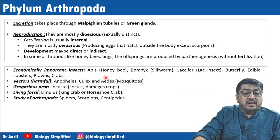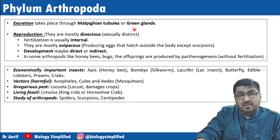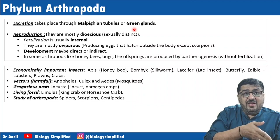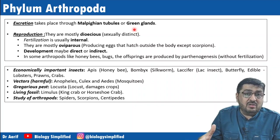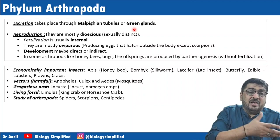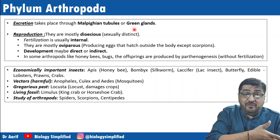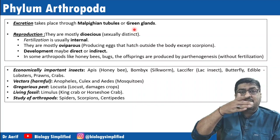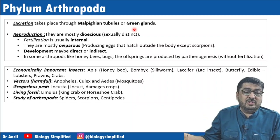Excretion takes place through Malpighian tubules, also called green glands. We have progressed from protonephridia to nephridia to Malpighian tubules — each being a more specific and advanced excretory organ than the previous phylum.